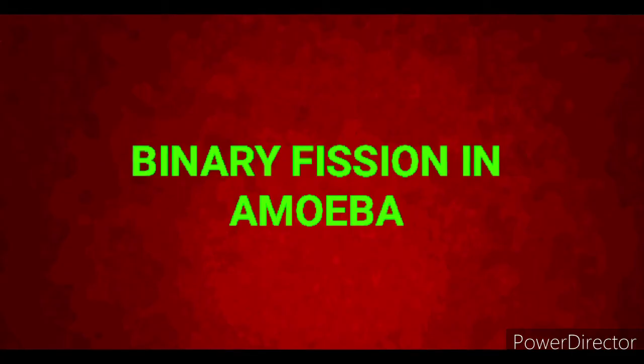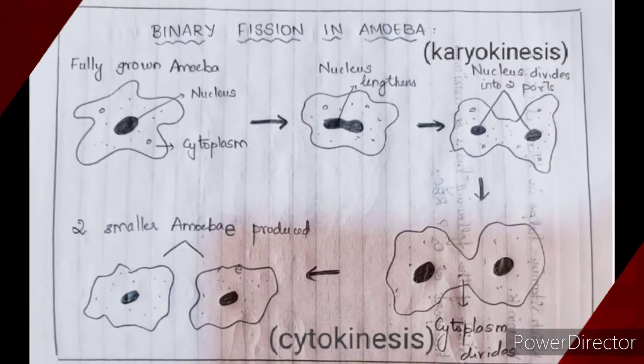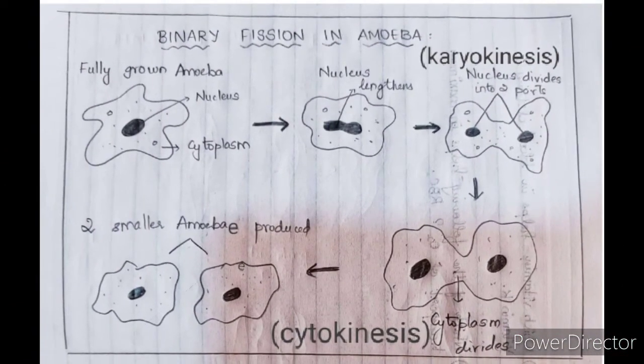In the case of amoeba, which performs asexual reproduction by binary fission, the single parent amoeba divides into two daughter cells. Now I'll explain the process step by step. From the given figure, you are able to get a clear idea about each step involved in the process of binary fission.